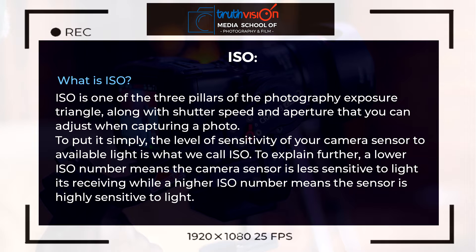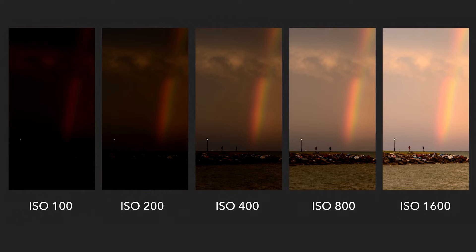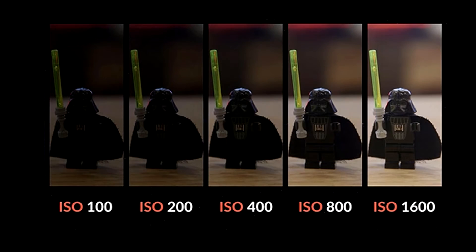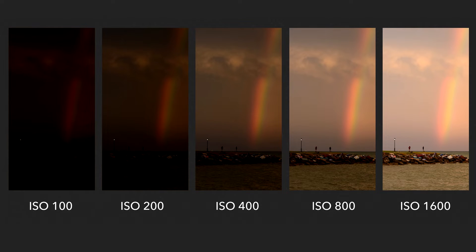A lower ISO number means the camera sensor is less sensitive to the light it's receiving, while a higher ISO number means the sensor is highly sensitive to the light it's receiving. If your ISO is 100, that means less light is coming into the camera, but when the ISO is at 1600, more light is coming into the camera. Sometimes when you are shooting in low-light situations, you may be forced to raise your ISO.